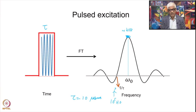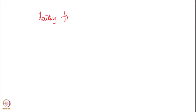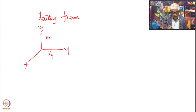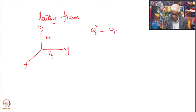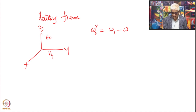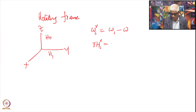Now we will see what is the effect of this pulse on the magnetization. To do that, let us go back into the rotating frame. With H0 applied, we have H1 applied along the transverse plane along the x-axis. Consider a frequency omega_i. In the rotating frame, the frequency is omega_i_r = omega_i minus omega_r, where omega_r is the RF frequency. Converting to field, gamma * H_i_r equals omega_i_r.